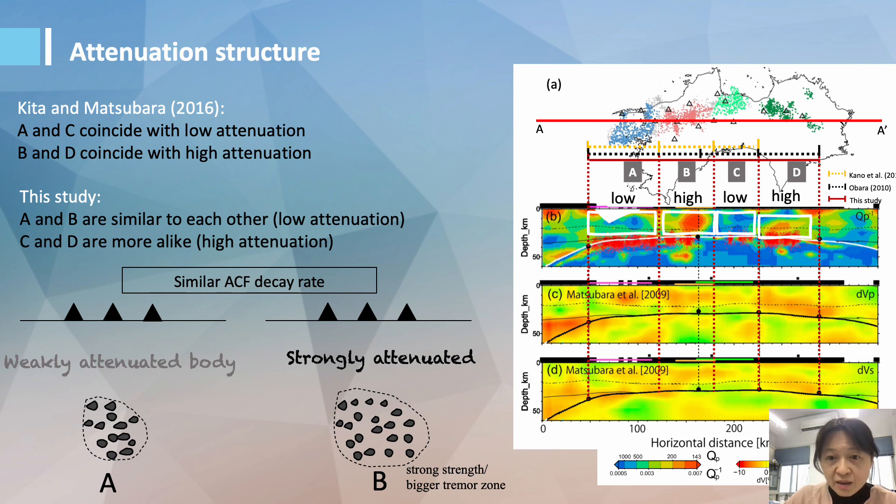Comparing area A and B, to have similar autocorrelation performance, the source in area B needs to be able to generate larger amplitude, long duration tremors. So either the tremors in area B are stronger in strength of asperities or bigger in the size of tremor zone.